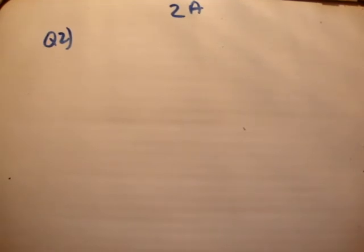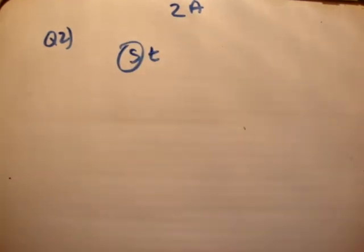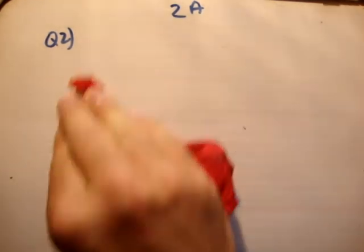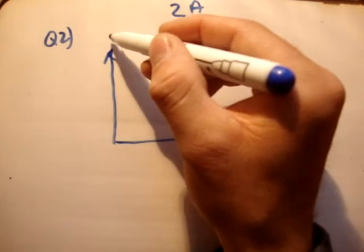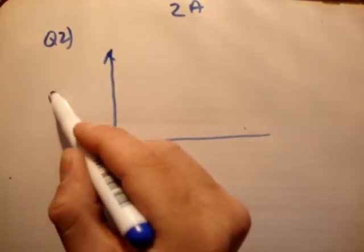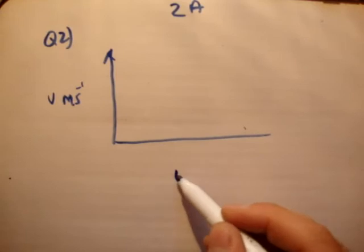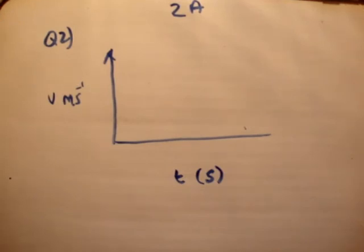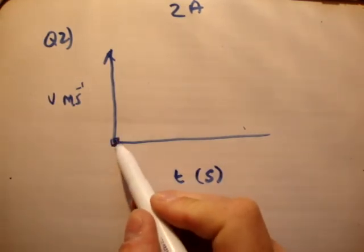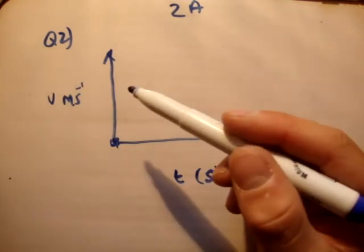So what do we do? The first thing we do is we draw our speed time graph because remember, we're not given directions so they're not vectors we're dealing with. So a speed time graph. Remember, you say what's on the y-axis first. So there's our y-axis and we're going to say that's speed and that is in meters per second like that. And we say that this axis here is time measured in seconds. So it's driving on a straight road accelerates with an acceleration of 3 meters per second. So its initial speed is 0. So you start off from here and it accelerates to a speed of 24 meters per second.